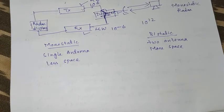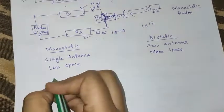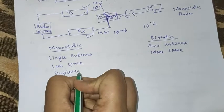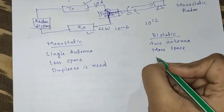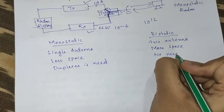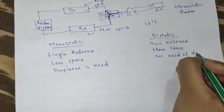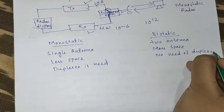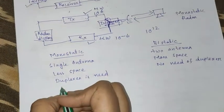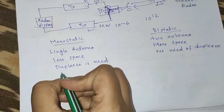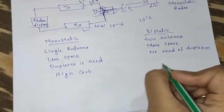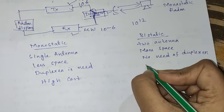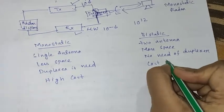In monostatic, a duplexer is needed to connect the single antenna. In bistatic, no duplexer is needed. Due to the presence of the duplexer, the cost is high in monostatic, but due to the absence of the duplexer, the cost is low in bistatic.